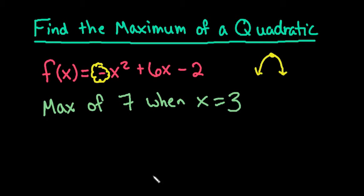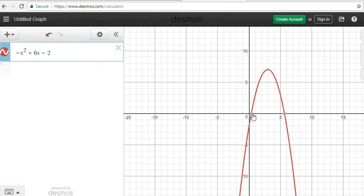Using Desmos is very easy to find any of your important points. Like if I go back here really quickly, we could also see that we have an intercept at 0.3540, and we have another solution at 5.646, and we have a y-intercept at 0, negative 2.